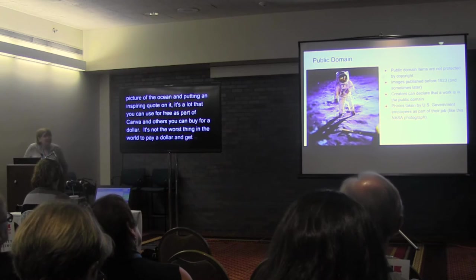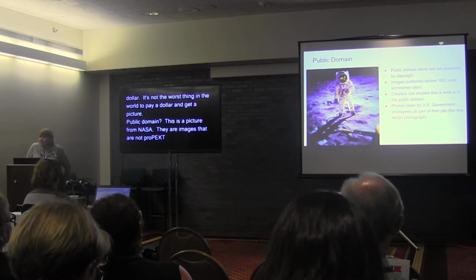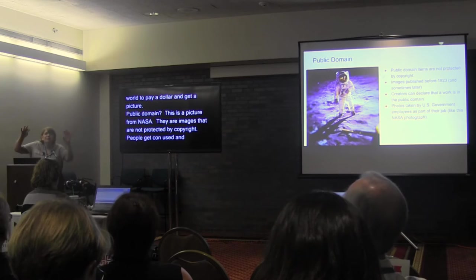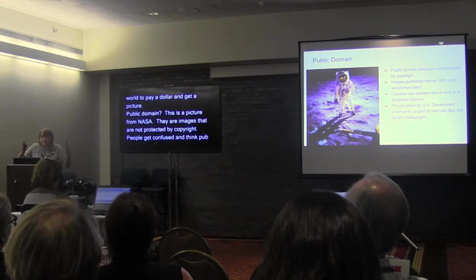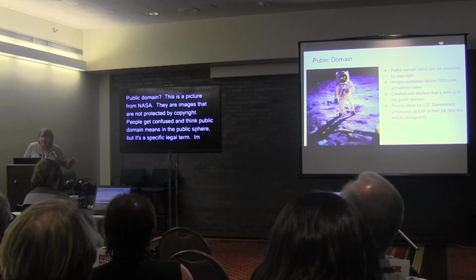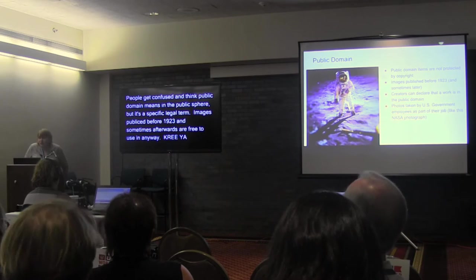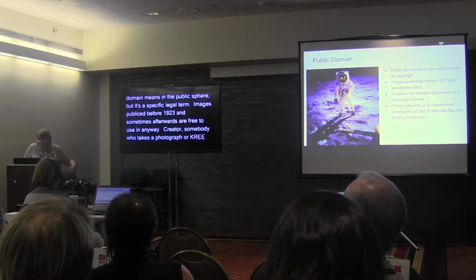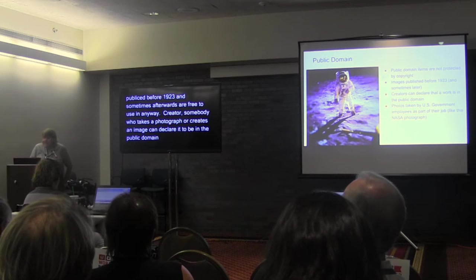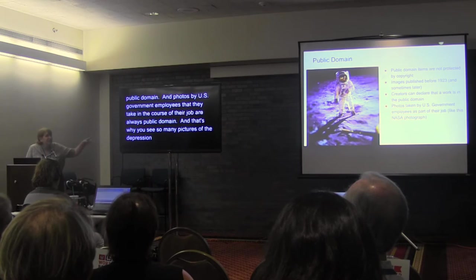Public domain — this is a picture from NASA. Public domain images are not protected by copyright. People sometimes use the term 'public domain' to mean 'in the public sphere,' but public domain is a specific legal term. Images published before 1923 and sometimes afterwards are free to use in any way. A creator can declare their image to be in the public domain. Photos by U.S. government employees taken in the course of their job are always public domain — that's why you see so many Depression-era photos like Migrant Mother and NASA pictures. They're completely free for anyone to use, commercial or not.